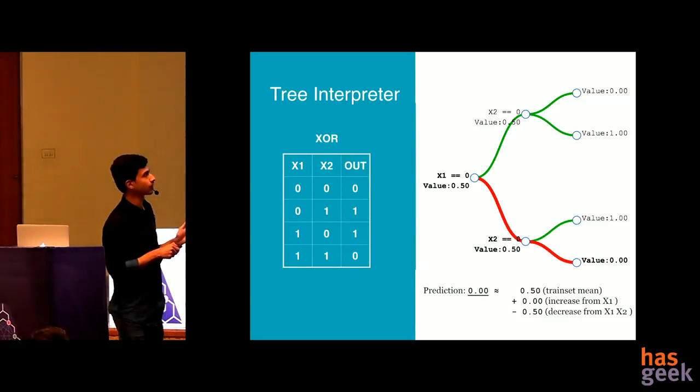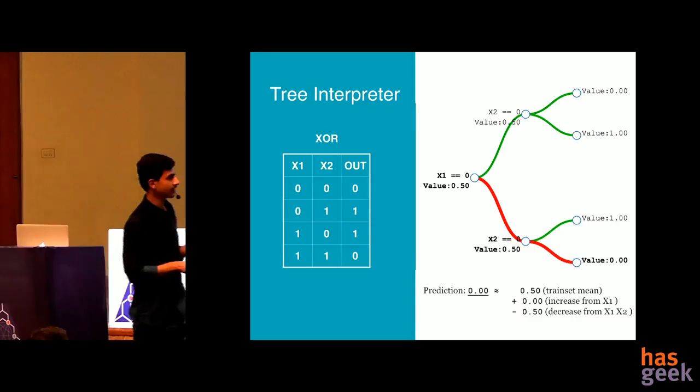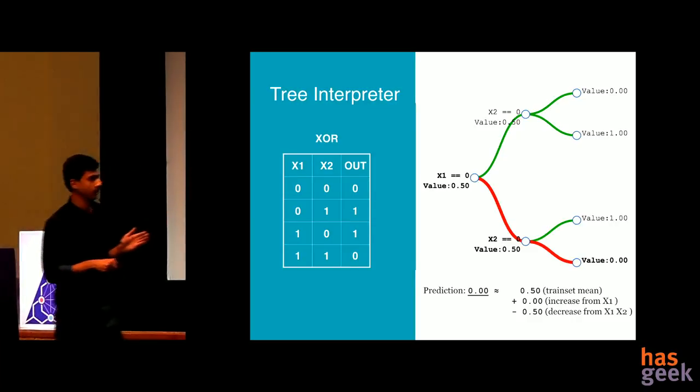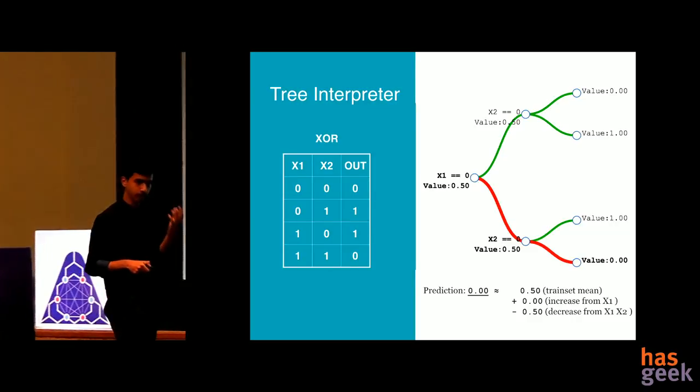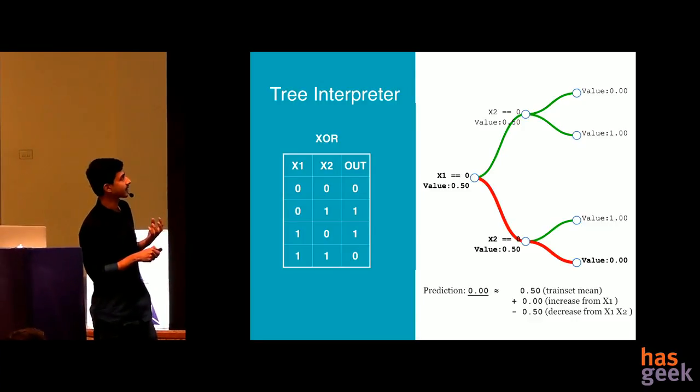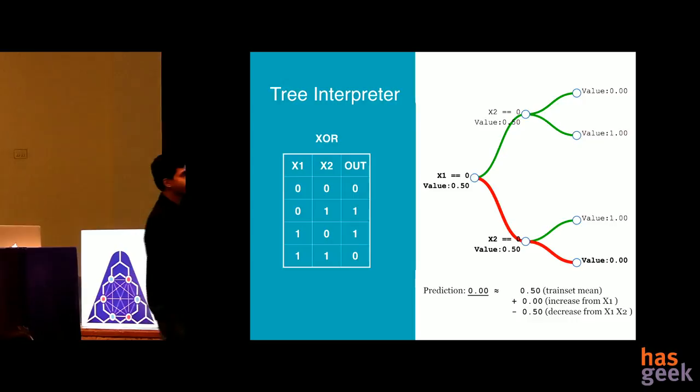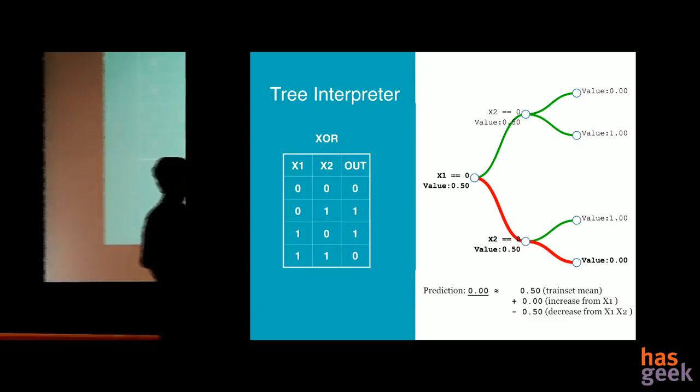X1 equals zero goes down because it's not zero, it's one. X2 equals zero - again it's not that, it's one. So it goes down. And the value is finally we get it as zero. So the prediction is zero. And how we decompose the contributions is - the train set is given a mean value.